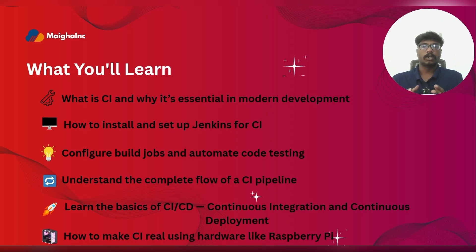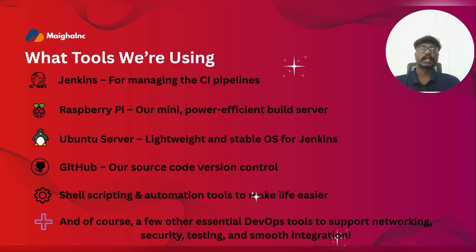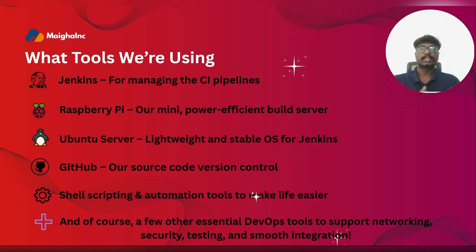By the end of this series you will know how to build and run your own CI pipeline step by step. The tools we will be using include Jenkins, Raspberry Pi, Ubuntu Server, GitHub, shell scripting, and automation tools. We will also explore a few additional DevOps tools to handle networking, ensure security, and run testing and seamless integration throughout the workflow.